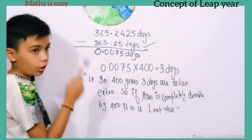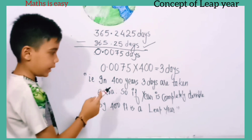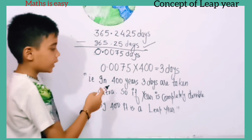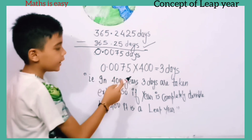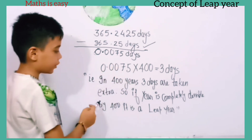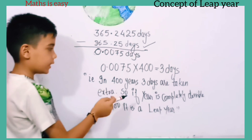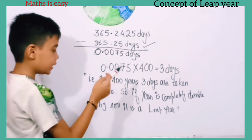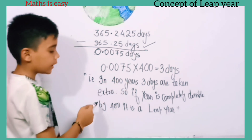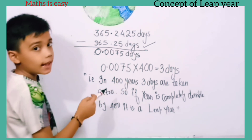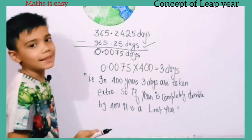That means in 400 years, 3 days are taken extra. So if a year is completely divisible by 400, it is a leap year.